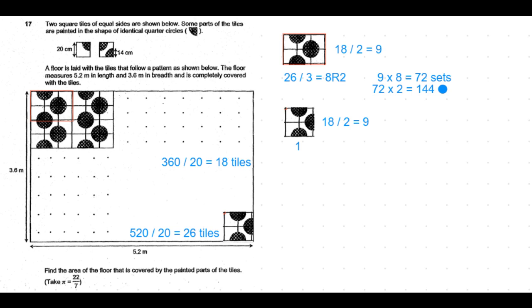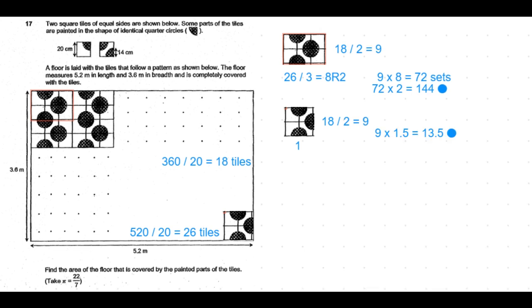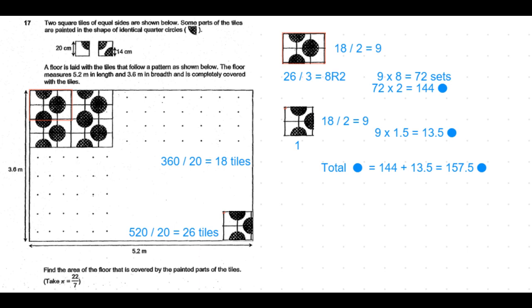And we see that in this set of 4 tiles there are 3 semicircular painted patterns, so a total of 1 and a half full circles. So 9 times 1 and a half is 13 and a half, or 13.5 full circles. So that makes the total number of painted circles 144 plus 13.5, which is 157.5.